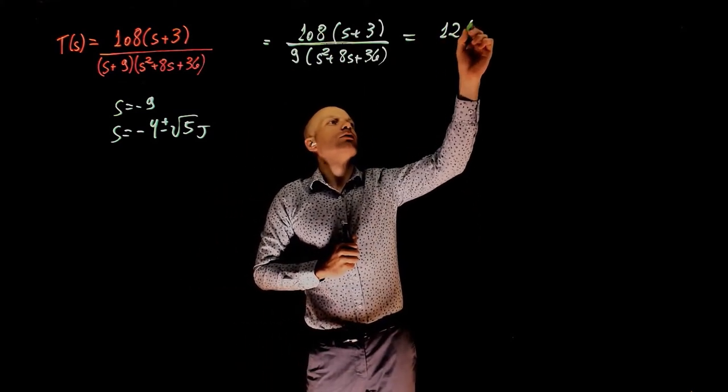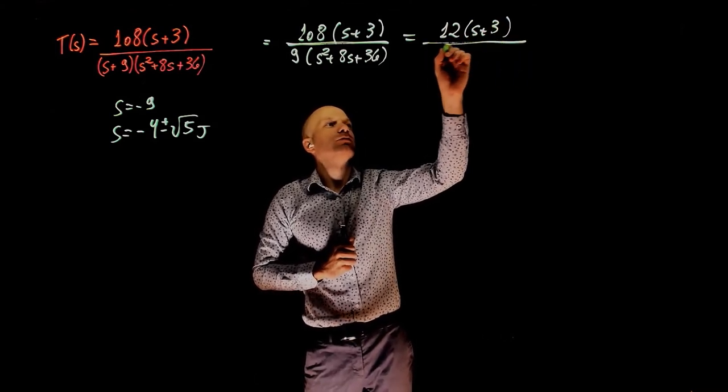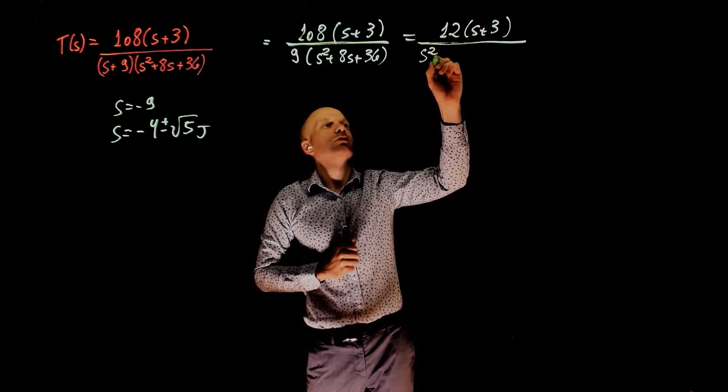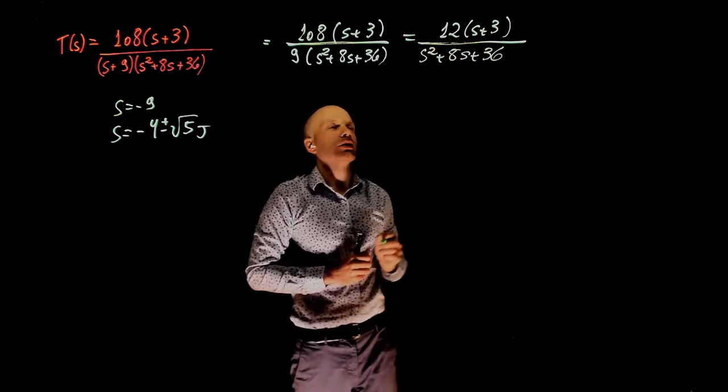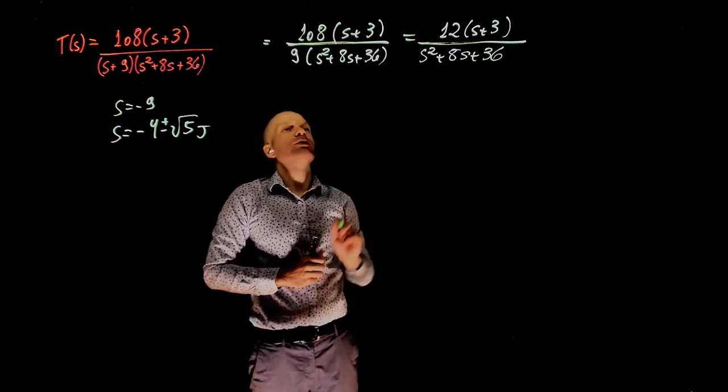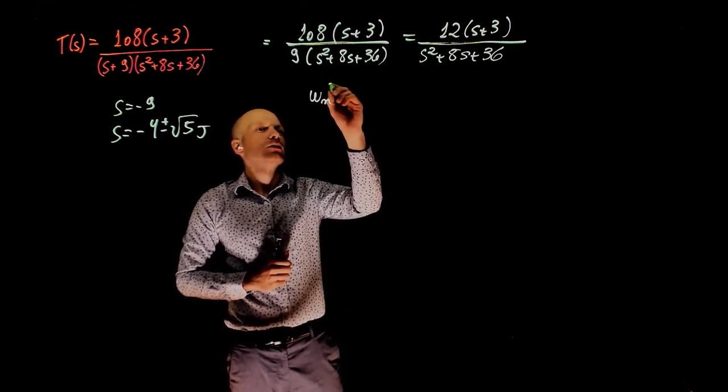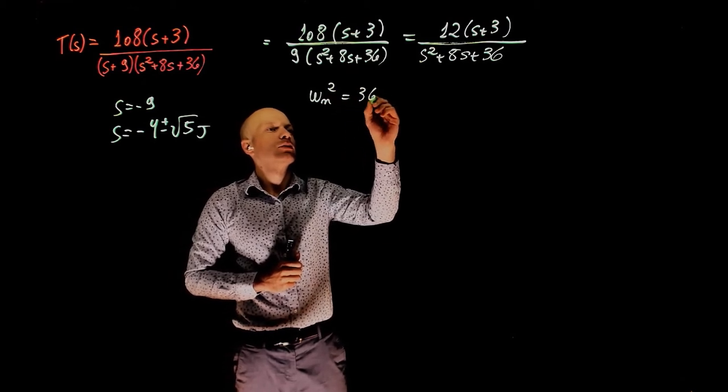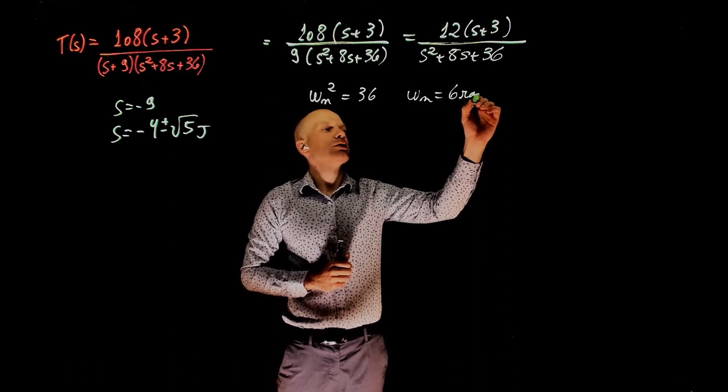That's 12 times s plus 3 over s squared plus 8s plus 36. From the standard form here, we know that omega n squared is 36. So omega n is 6 radians per second.